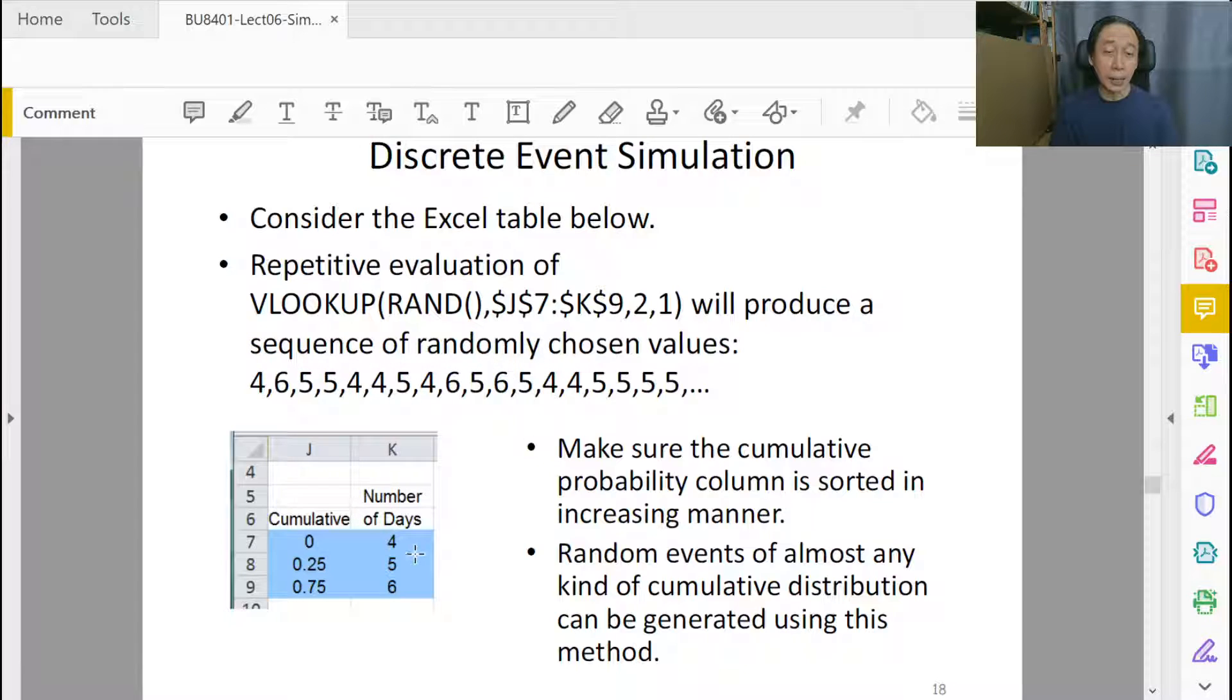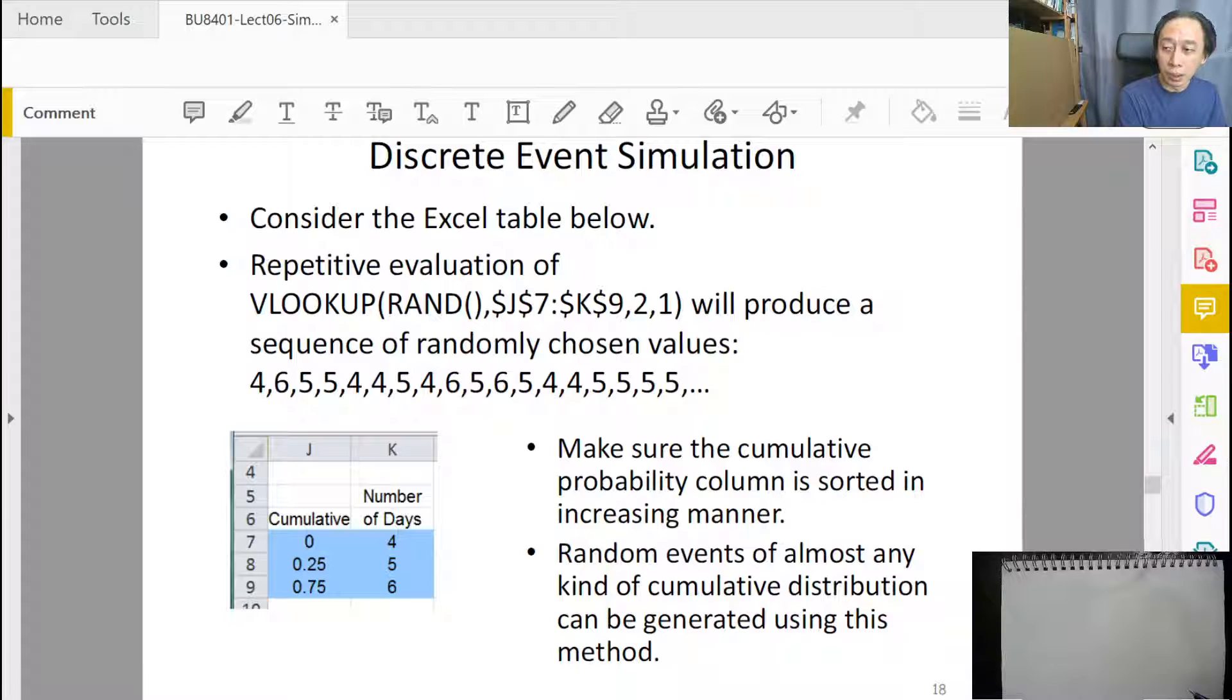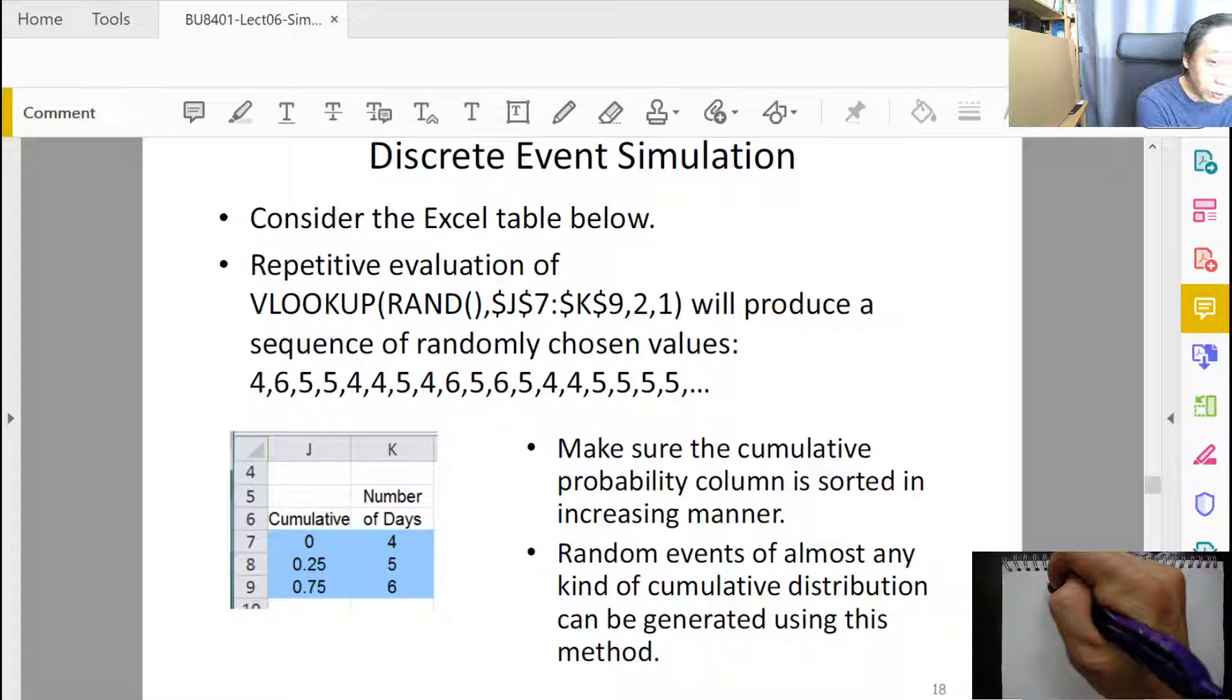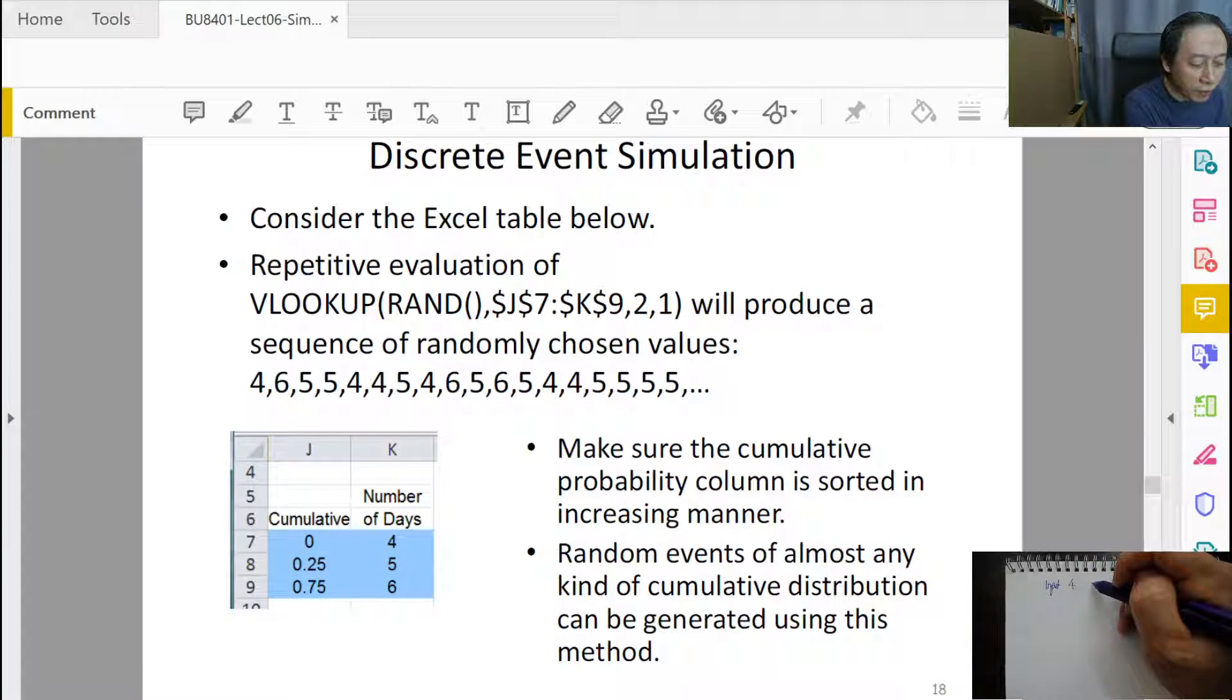Earlier on I did say that the idea is five occurs fifty percent of the time. How do I know? Because 0.75 minus 0.25... actually, it's the other way around. Let me just switch over. The other way around in the sense that we are normally given that four will... the input to our simulation question is that four occurs twenty-five percent of the time, five occurs fifty percent of the time, and six occurs twenty-five percent of the time.